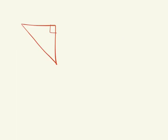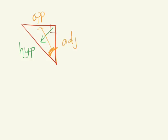Which side of this triangle would be labeled the hypotenuse? This side here — I'm just going to put HYP for short — it's opposite the right angle. That's the hypotenuse. If I am referring to this angle, which side would be the opposite side length? This side here is the opposite side length, so the remaining side length would be referred to as the adjacent side — ADJ for short.